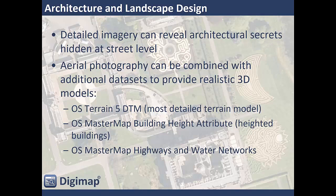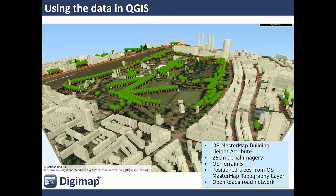Similarly with architectural studies, you can combine multiple datasets from Digimap and create realistic 3D models to assess the impact of changes to existing architecture. Lots of different applications now support 3D modelling — GIS, CAD and others. Here's an example using QGIS, the world's leading open source GIS system. The list of datasets included to create this model is shown on the right-hand side. The aerial photography adds real context to the model, and all these datasets have been downloaded from Digimap and added to QGIS using a simple plugin to generate this 3D model.